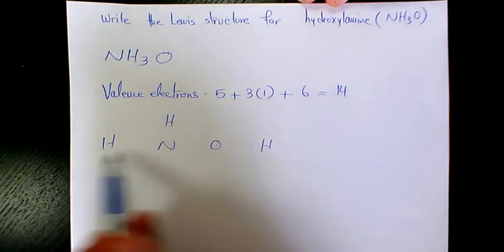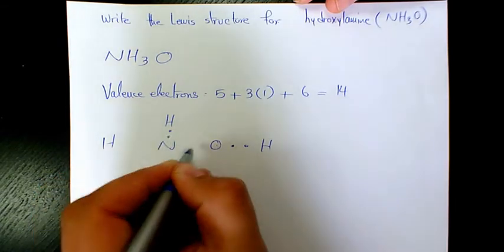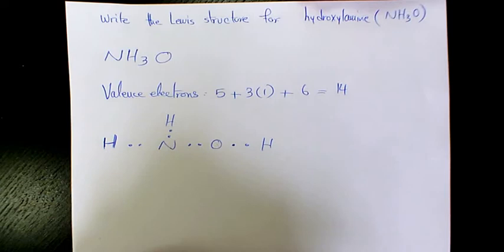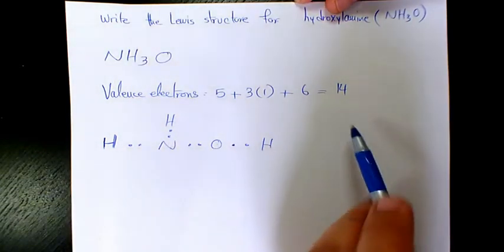So we have three hydrogens, N, and O. Then I place dots between each of these atoms. So we use two, four, six, eight of them. We need six more.